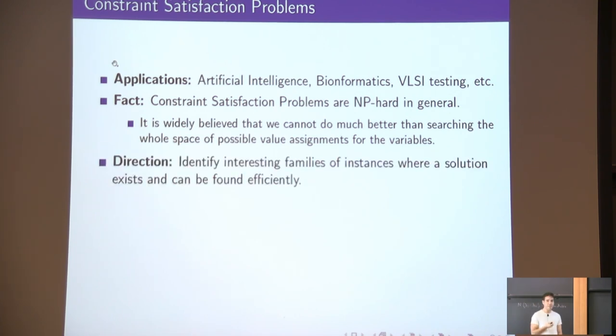In light of this fact, a common direction people take is to try to identify interesting families of constraint satisfaction problem instances where a solution is guaranteed to exist and can be found efficiently.